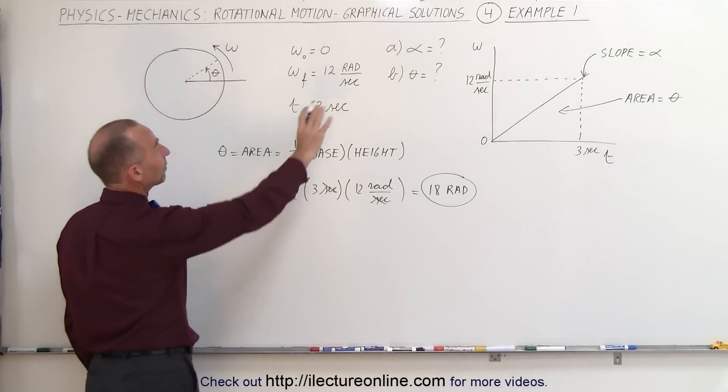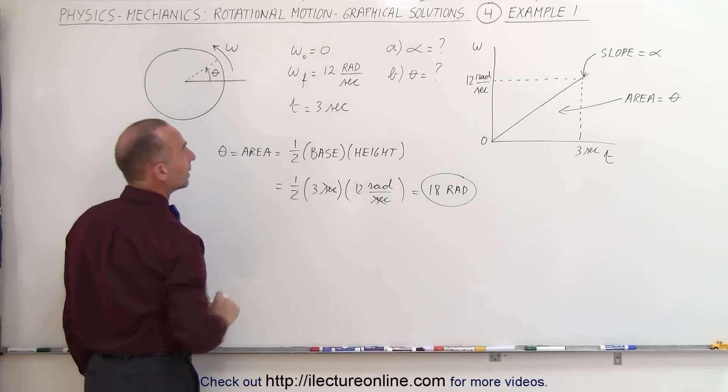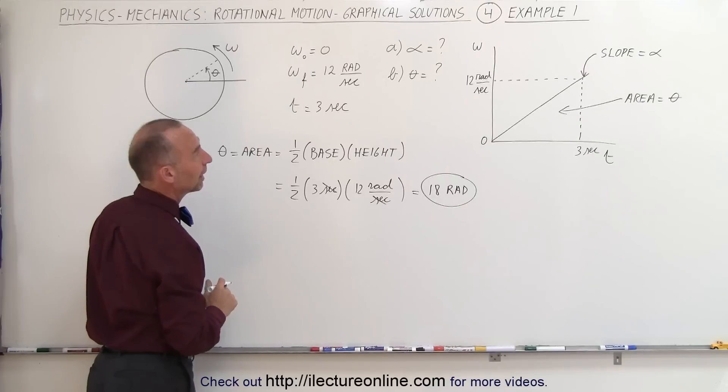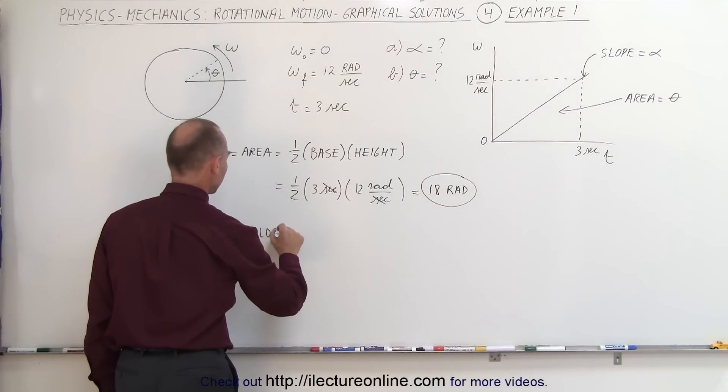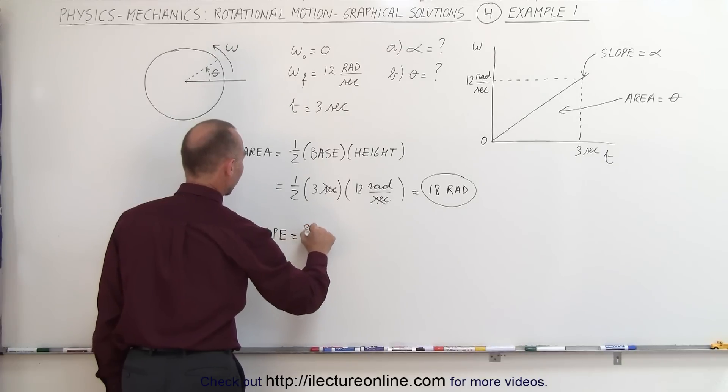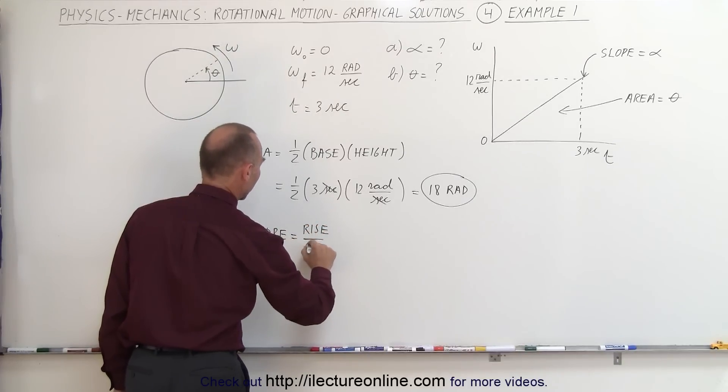Next we're going to try to find the angular acceleration and we realize that the angular acceleration is equal to the slope and the slope is equal to the rise divided by the run.